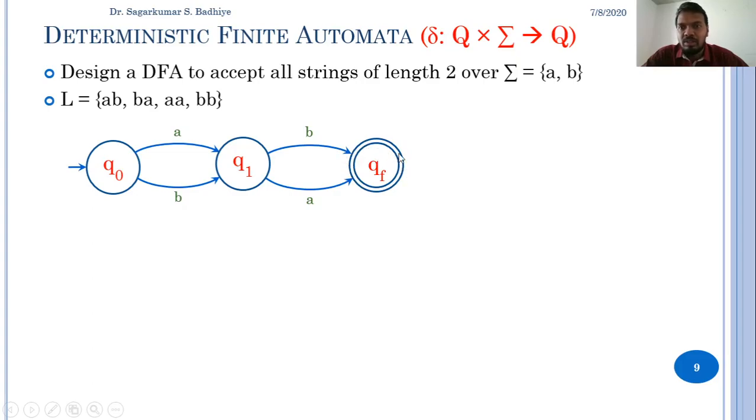But when I am in state qf and get another input as a or b, this should not be accepted by the finite automata. Thus we need to add a transition from qf on a and b that will take us to a state from where there should be no transition to a final state. Such states are called dead states.